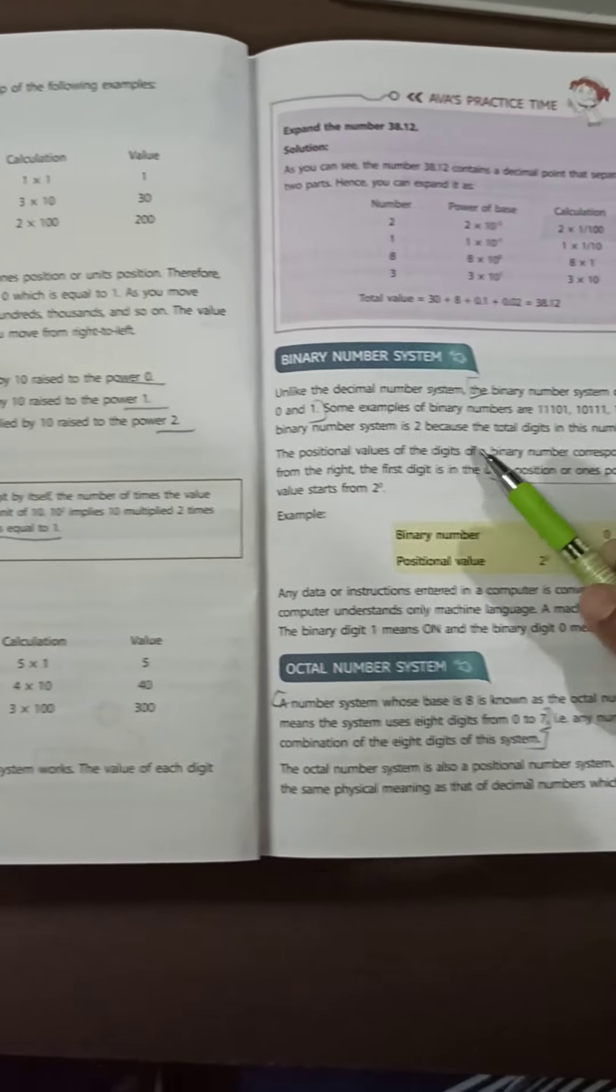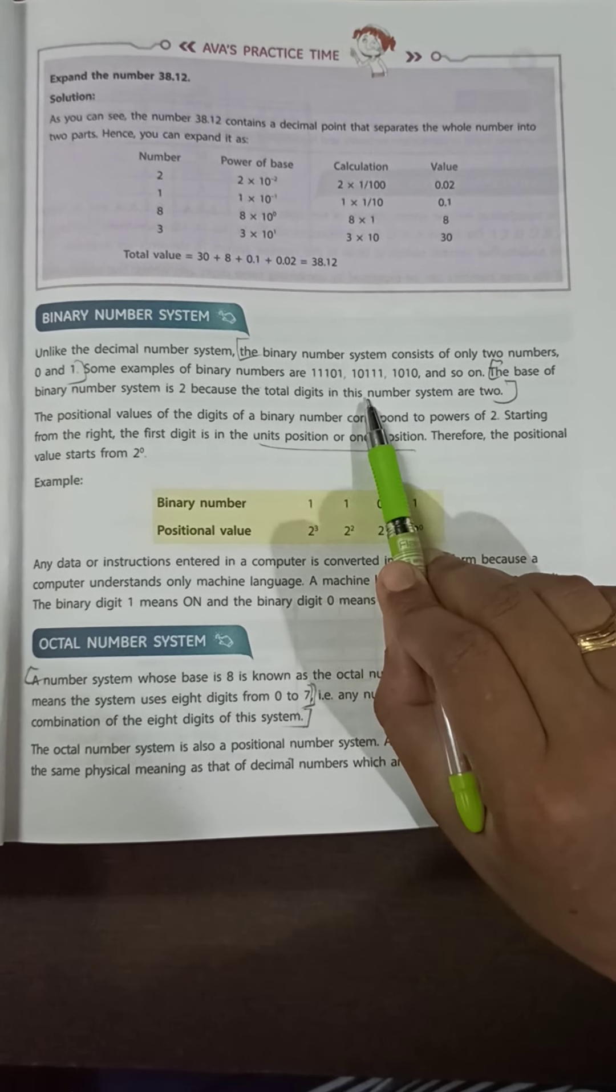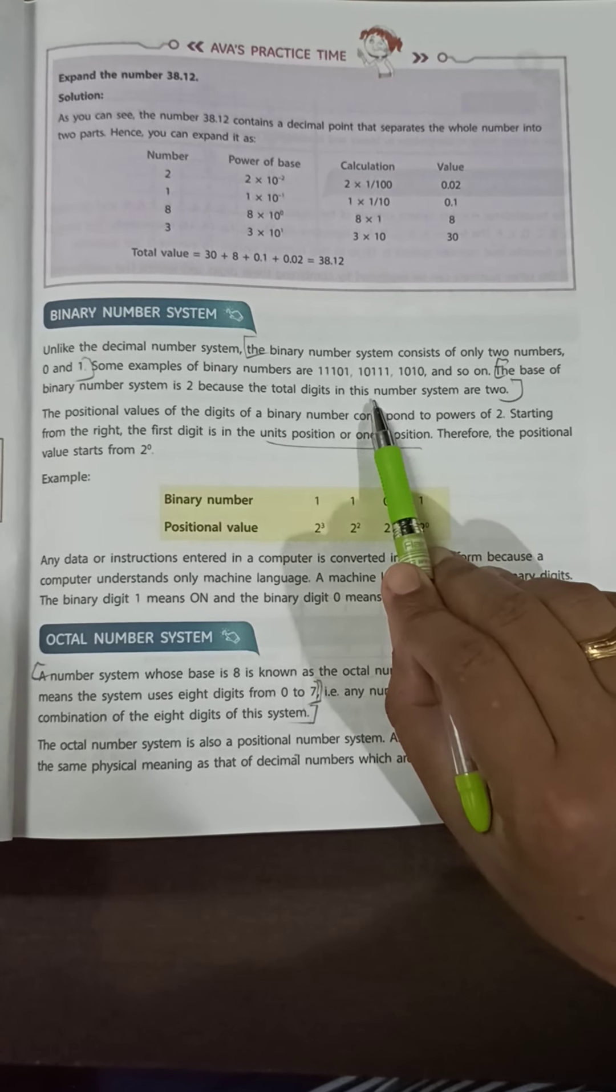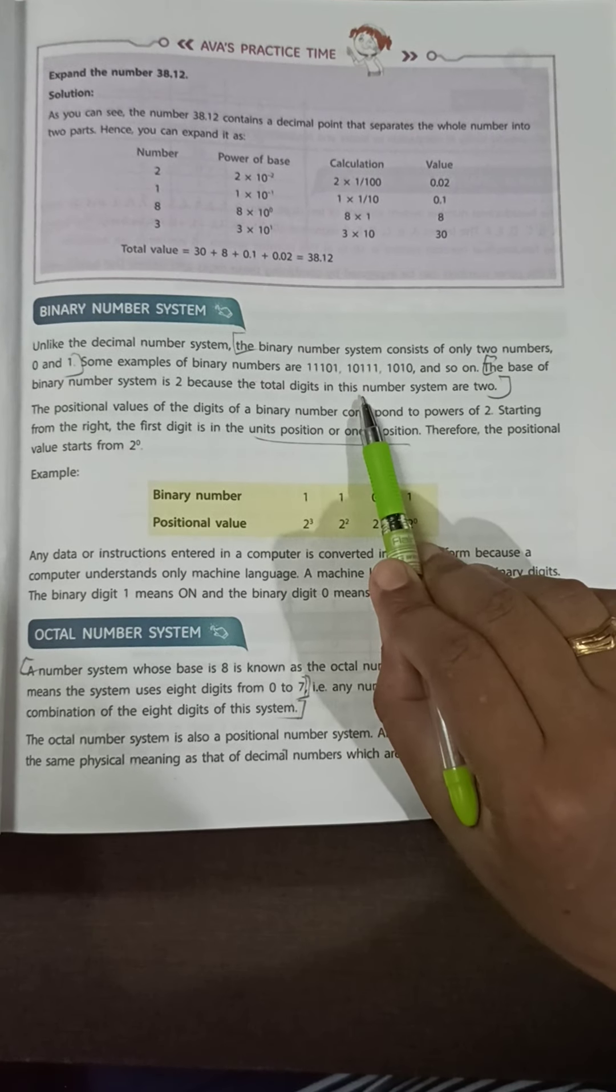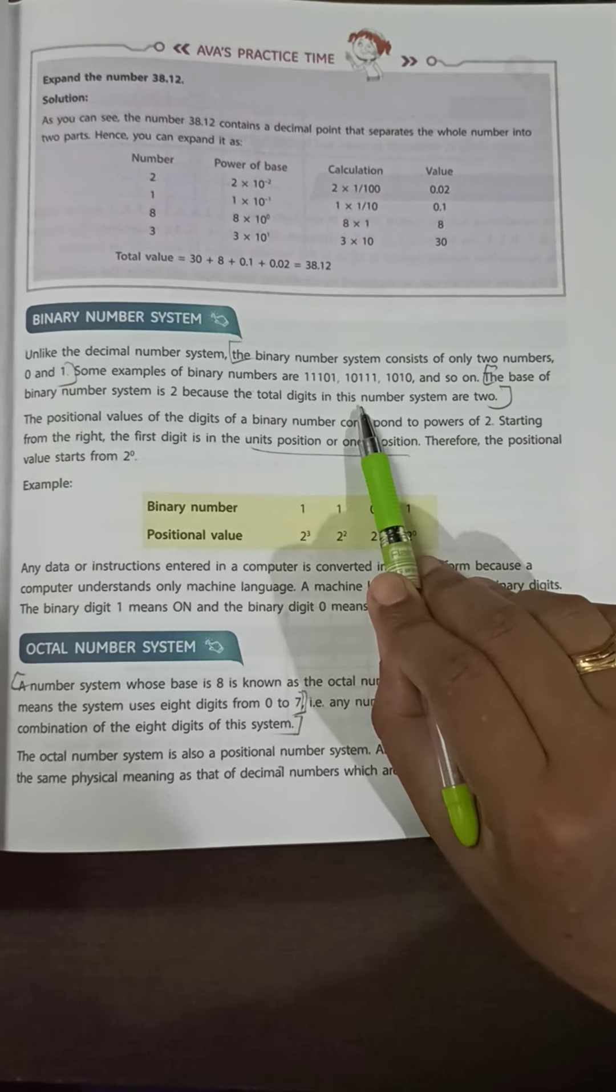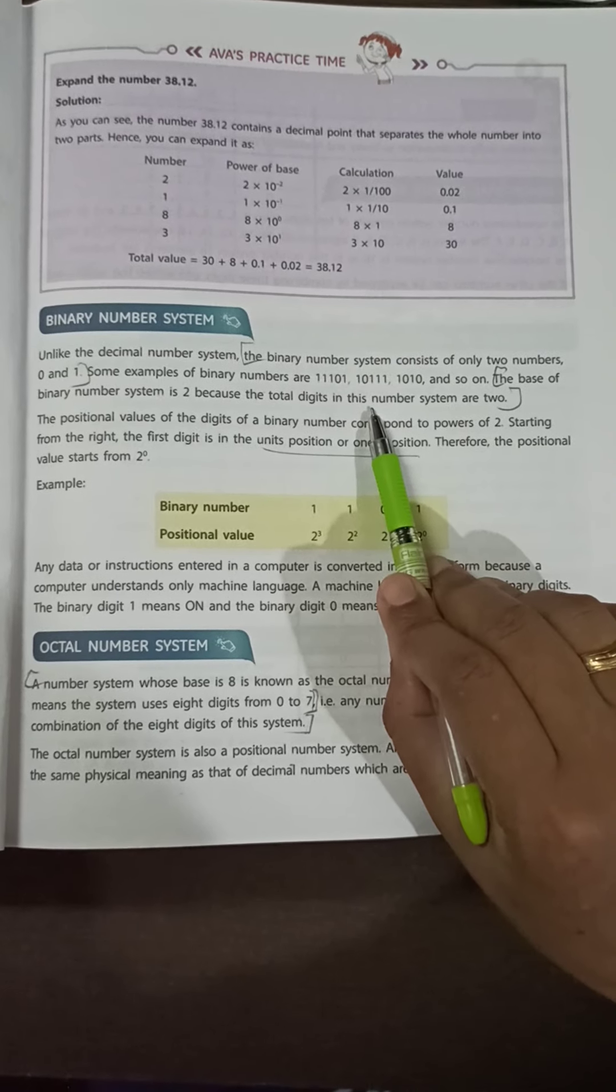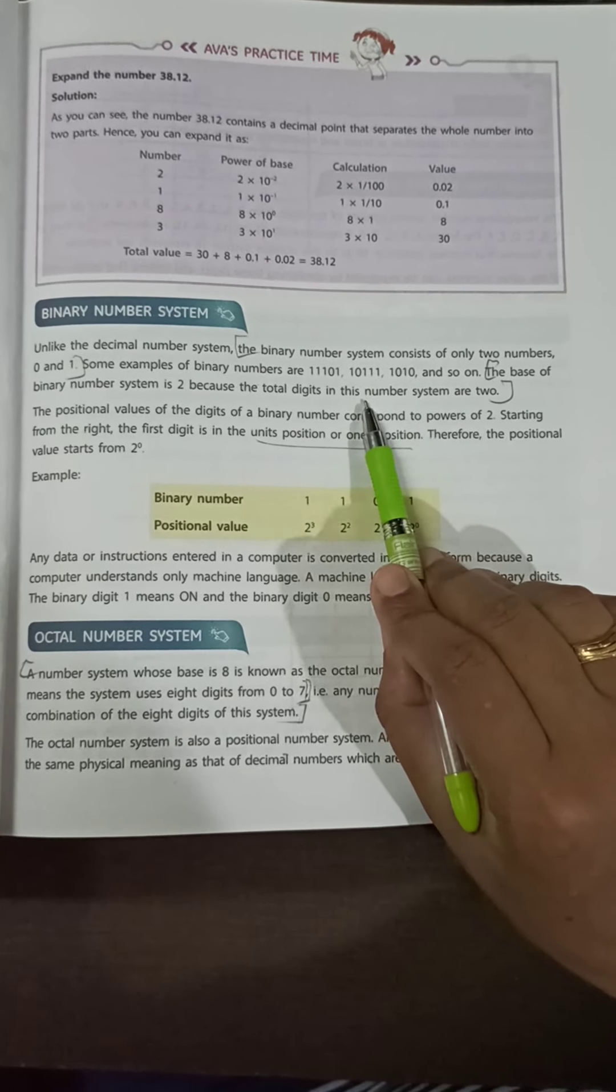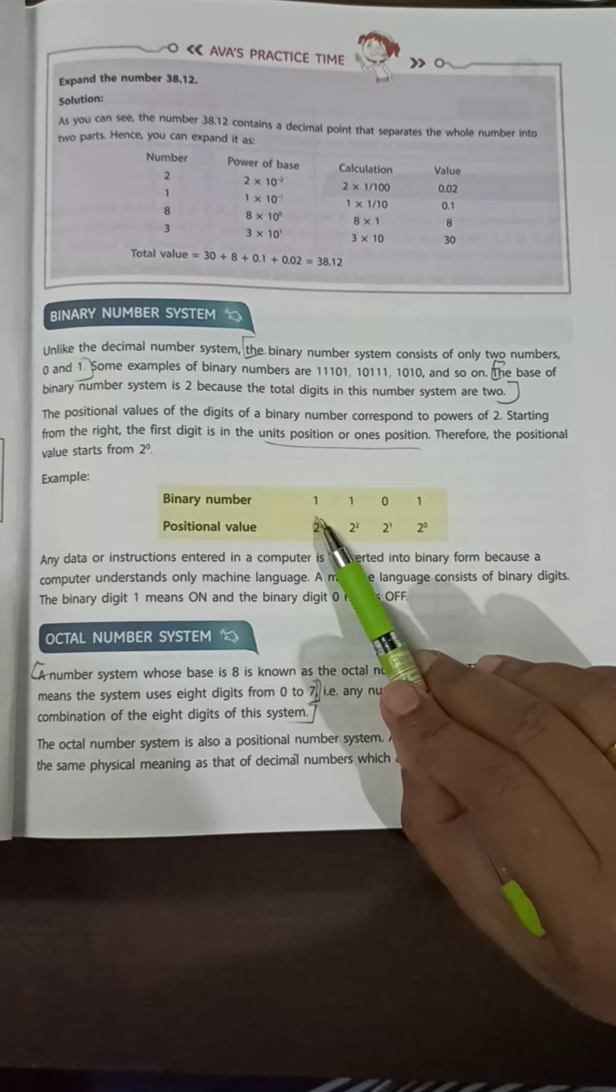The next one is binary number system. In that system, we have two digits: 0 and 1. Computer represents all data and information in binary numbers because computers understand only two numbers, 0 and 1. It includes audio, graphics, video, text, and numbers. The base of binary number system is 2.